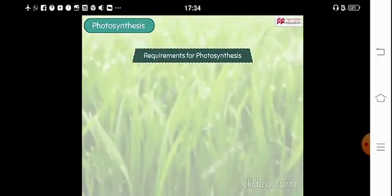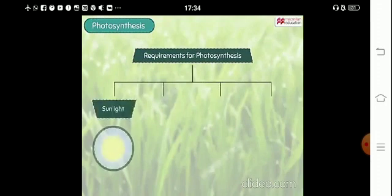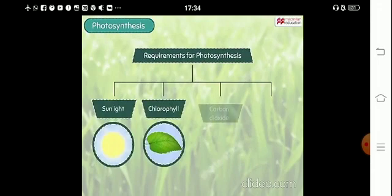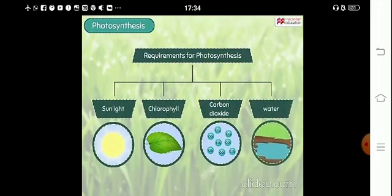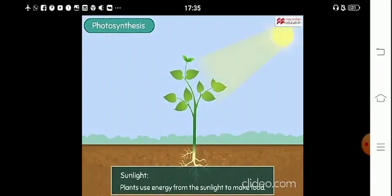The important things needed by a plant to perform photosynthesis are sunlight, chlorophyll, carbon dioxide, and water. All plants use energy from the sunlight to make food.